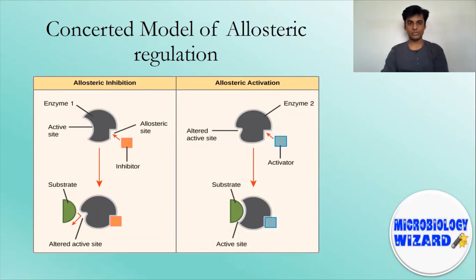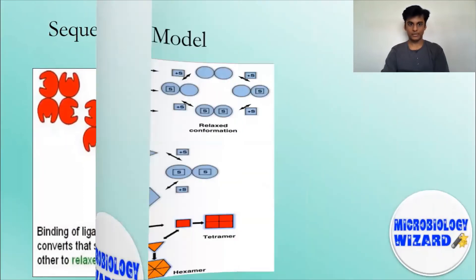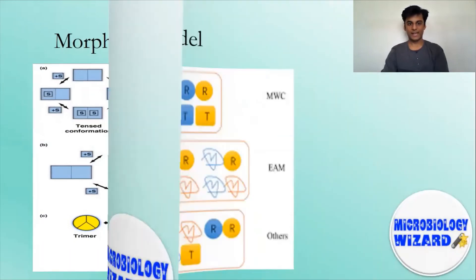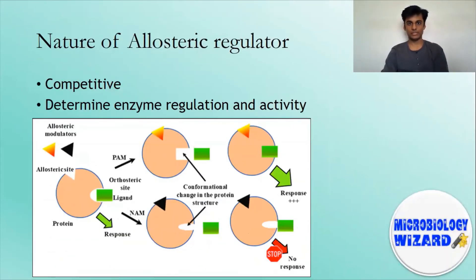Apart from the concerted model, there are also other models which explain allosteric regulation, such as the sequential model, morpheein model, and ensemble model. The allosteric regulator plays a very crucial role in determining the regulation of enzyme activity. Generally, allosteric regulators are competitive in nature, which can be understood with feedback inhibitors. The rate of substrate and inhibitor molecule decides the degree of enzyme activity. If the inhibitor binds first to the allosteric site, the conformational change modifies the active site, causing a chain of conformational changes in the enzyme subunits which finally makes the allosteric site inactive and unable to bind with inhibitors, so the enzyme remains active.